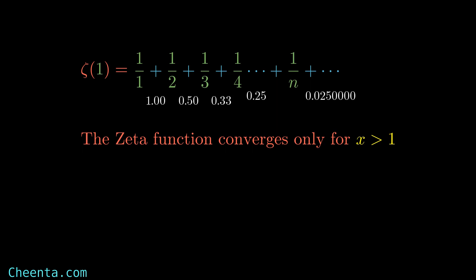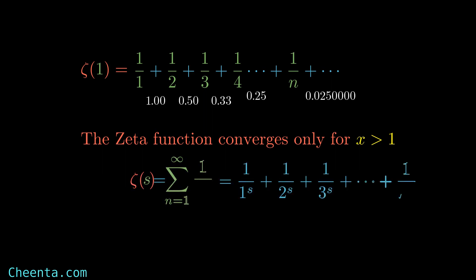Now to understand this in much more detail I will show you a proof, but before that I will define the Zeta function for complex numbers, which are more general than the real numbers. Before understanding the Zeta function with a complex argument, let's understand what we mean by complex powers.